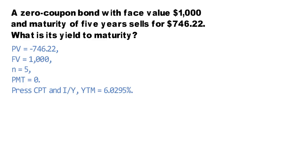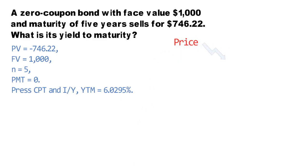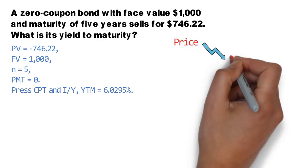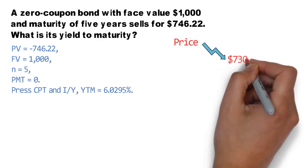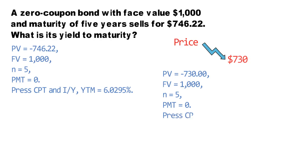Second question: what will happen to its yield to maturity if its price falls immediately to $730? Again, in your financial calculator, enter PV equals negative 730, FV equals 1,000, N equals 5, PMT equals 0, and press compute, which is CPT, and I/Y.